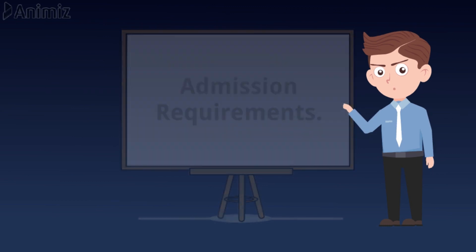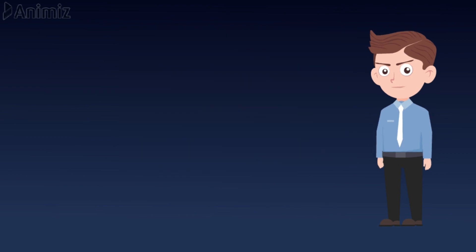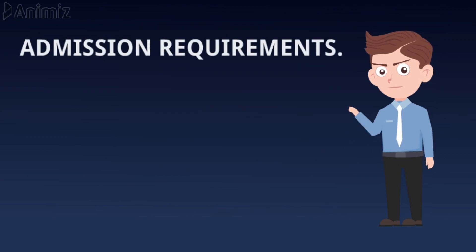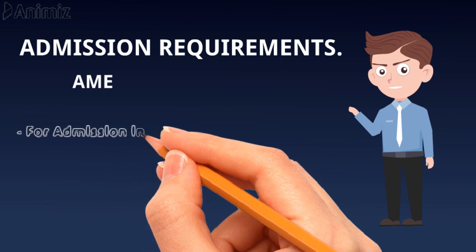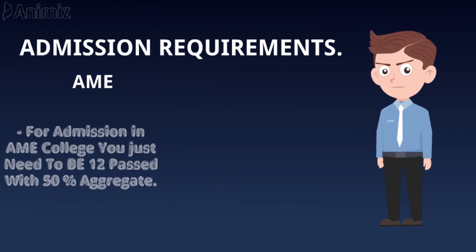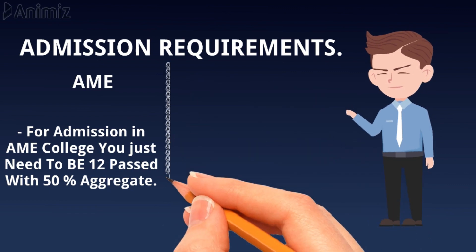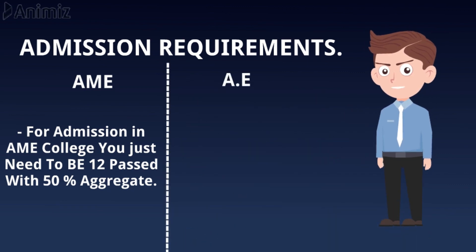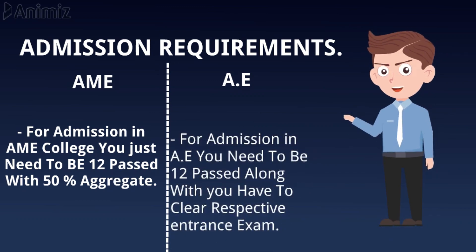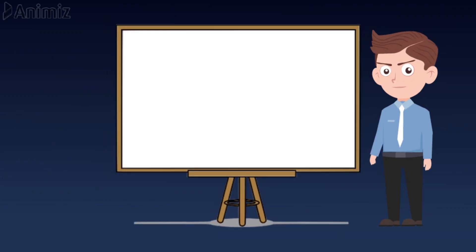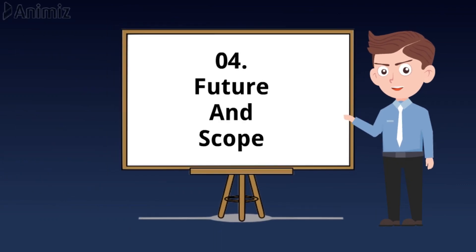The third point of difference is admissions and eligibility criteria. For admission in a CAR 147 DGCA approved college for AME, you just need to be 12th pass with 50 percent aggregate. For aeronautical engineering, for admission in a university approved college, you need to be 12th pass and also clear the respective entrance exam.